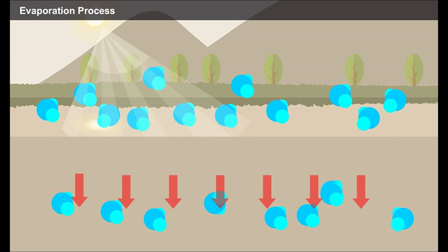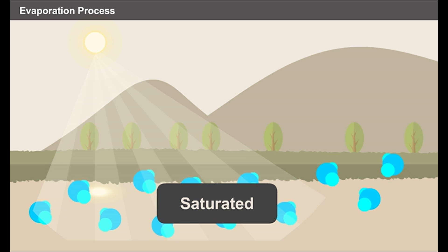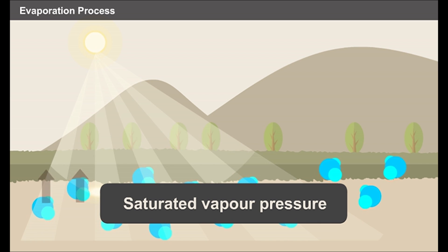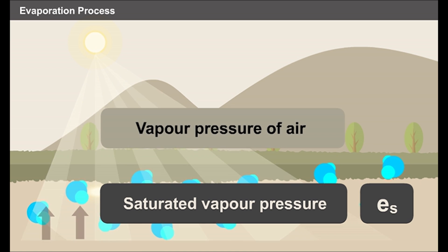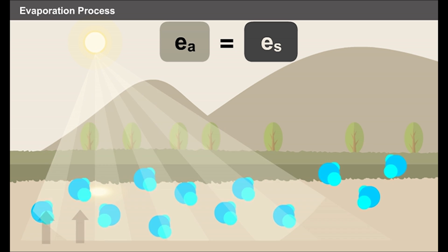After reaching the saturation point, the surface medium is no longer able to hold the water molecules. At that instant, the water vapours exert a partial pressure called the saturated vapour pressure, which is denoted by ES. Similarly, the air in the atmosphere exerts a pressure called the vapour pressure of air, which is denoted by EA. When the vapour pressure of air EA is equal to the saturated vapour pressure of water ES, evaporation stops and this state is known as the equilibrium state.